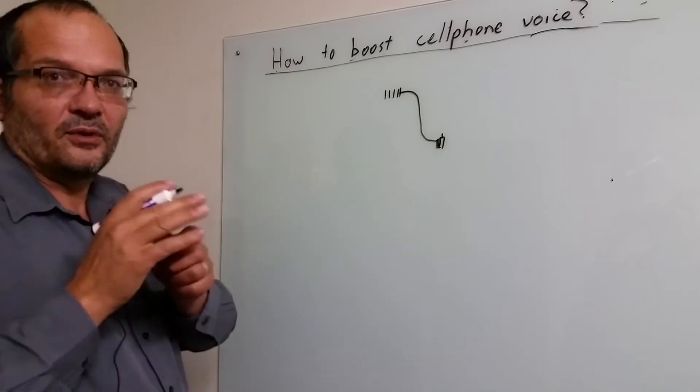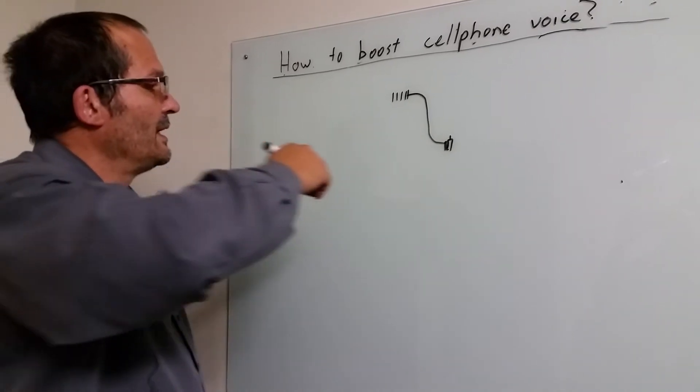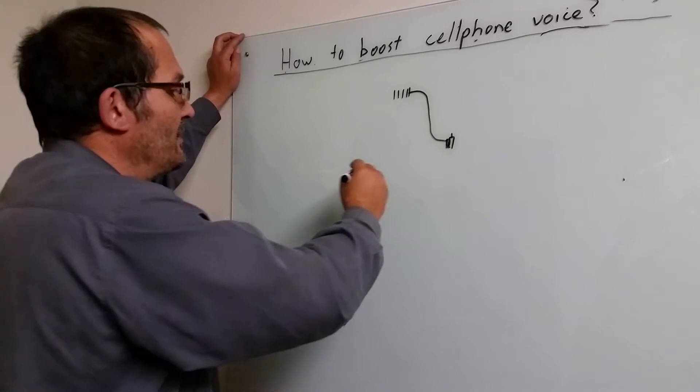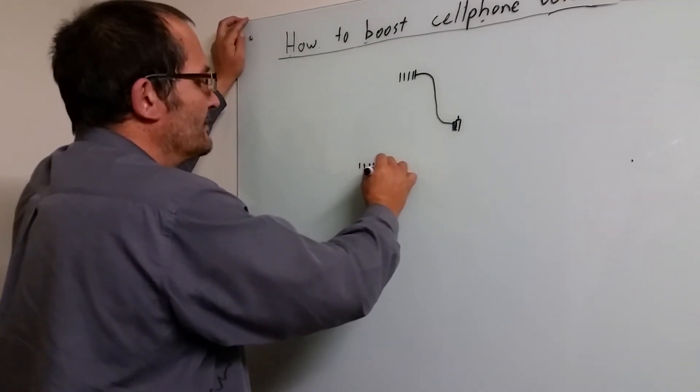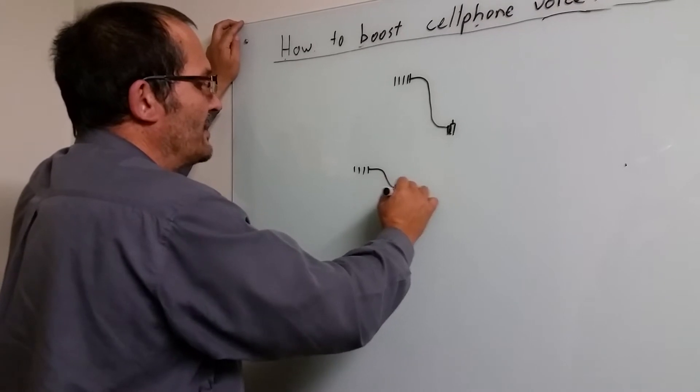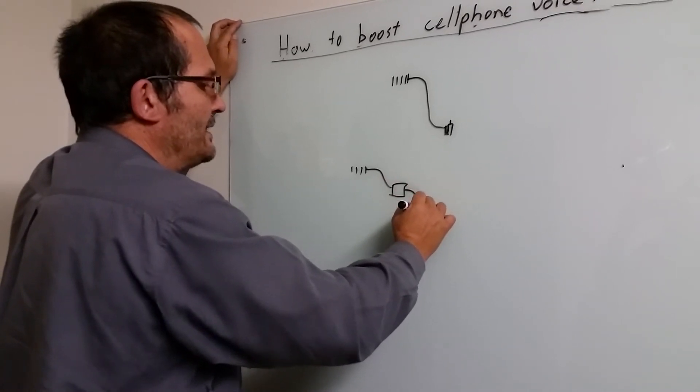The only problem is that you have to of course hold it next to the phone. The typical repeater that many people advertise if you look on the net is a device that actually takes the signal, amplifies it, and I've got another video explaining how, and it retransmits it.